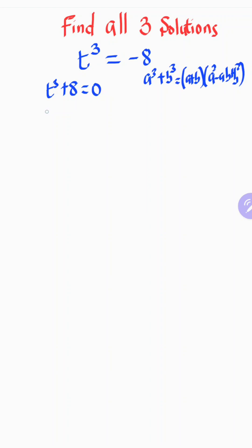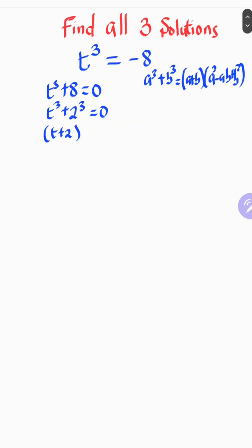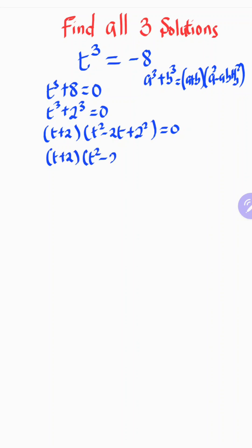Using this approach, we rewrite the equation as t to the power of three plus two to the power of three equals zero. This gives us t plus two — which corresponds to a plus b — times t squared minus two t plus two squared, equals zero.